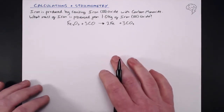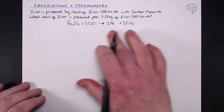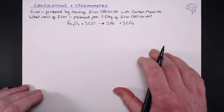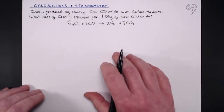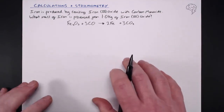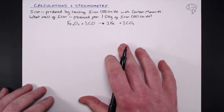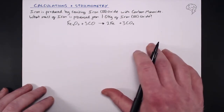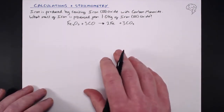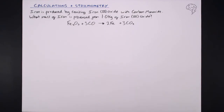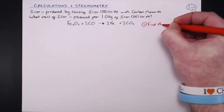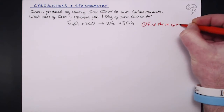Whenever you get a question like this and need to use stoichiometry and these calculations to get to the answer, it is essentially a three-step process. Step one: find the number of moles of something.